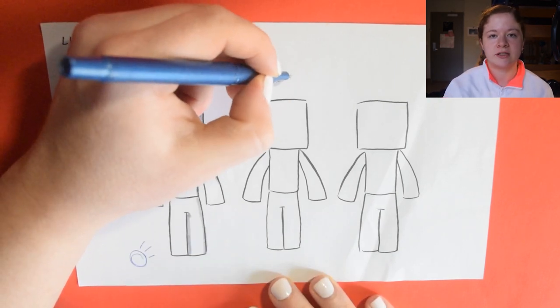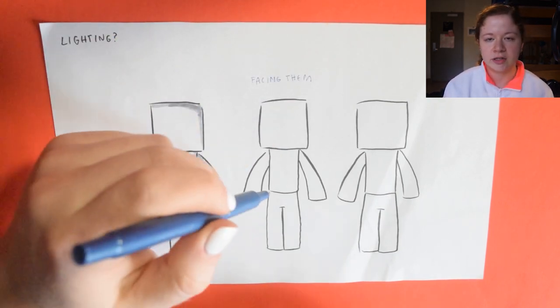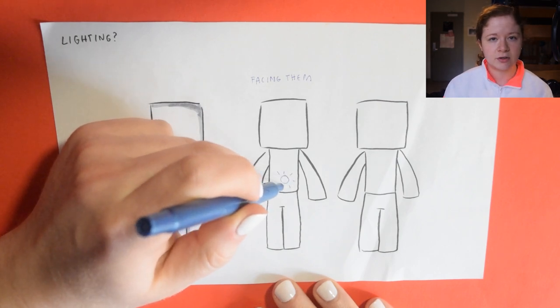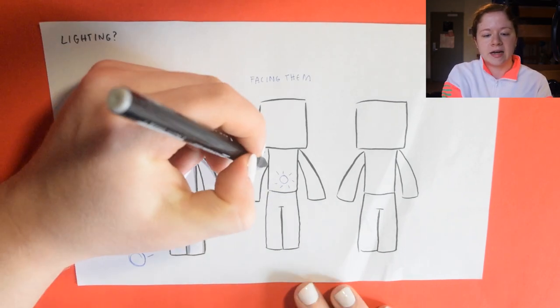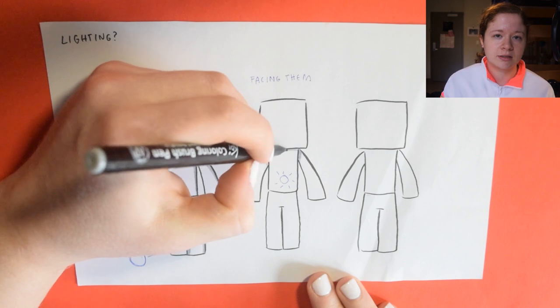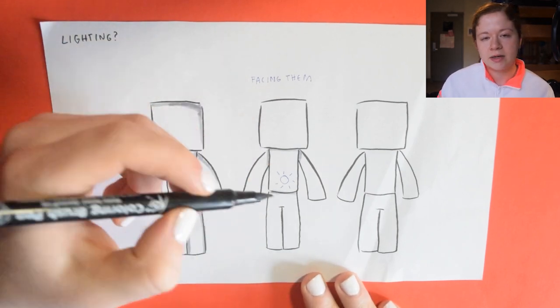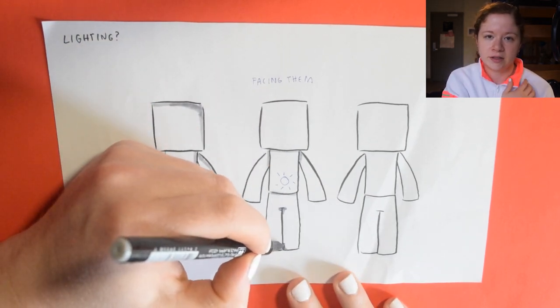My second example is if the light was facing straight towards him. You're going to get pretty much no shadows at all because the light is going straight at him from a hip level and it's going to cover up pretty much everything. You might get a little bit of shadows right in the armpit area.